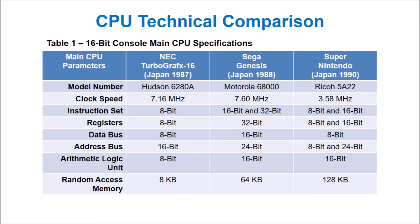Here is a summary of the key CPU parameters for each console. As the table shows, the TurboGrafx-16's Hudson 6280A CPU is actually 8-bit, while the TurboGrafx-16 is not a true 16-bit console.